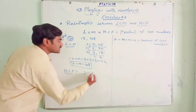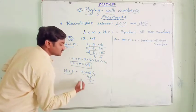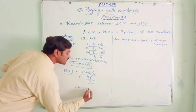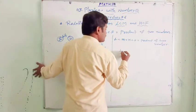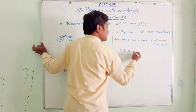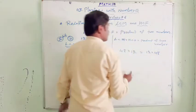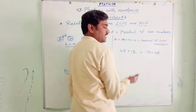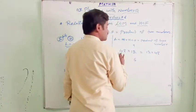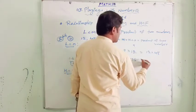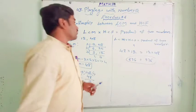Now HCF of 48 and 12: 12 × 4 = 48, remainder 0. Therefore HCF = 12. Checking the relation: LCM × HCF = 48 × 12 = 576. Product of the two numbers = 12 × 48 = 576. This condition is also satisfied.